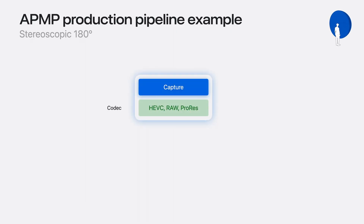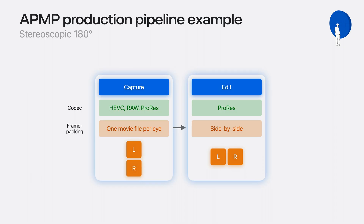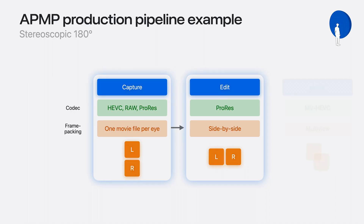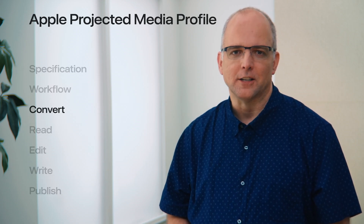Here is an example of a stereoscopic 180 workflow where APMP signaling can be used at each step. Capture the content using HEVC, RAW, or ProRes codecs, then edit using ProRes. For capturing and editing 3D content, you can utilize frame-packed, multi-view, separate movie files per eye, and even two video tracks signaled in one movie file. In this example, capture requires two movie files, while editing is performed with side-by-side frame-packed content. Encode and publish using the MultiView HEVC, or MV-HEVC codec, for efficient delivery and playback on VisionOS.